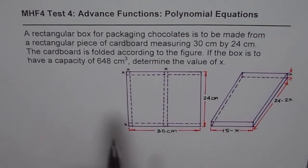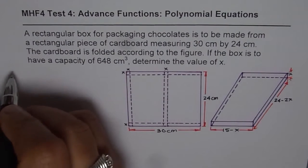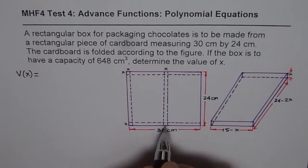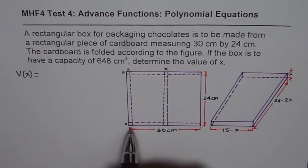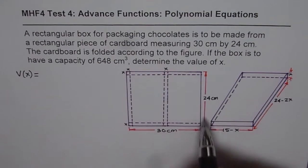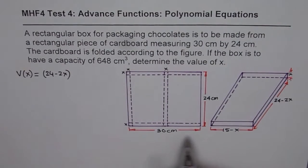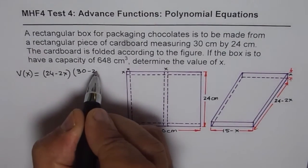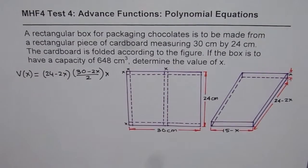Now we are given volume of the box as 648 cm cubed. We need to find the dimensions. So let's begin by writing a function. So the function is volume in terms of x, which is the side length of a fold. So as we can see from the figure, the volume is length times width times height. So length is 24 minus 2x. Width is 30 minus 2x divided by 2. And the height is x for us. So that becomes the volume.